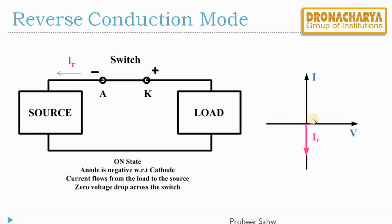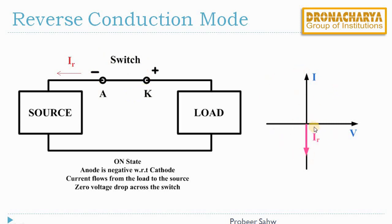The last mode is reverse conduction mode. In this case, the load is at higher potential than the source, so the cathode is at higher potential than the anode. But the switch is closed, hence current will flow. This time the current will flow from the load to the source. And since the switch is closed, there will be no voltage drop across this switch. We can see in the VI characteristics on the right that there is a reverse current flowing through the switch.